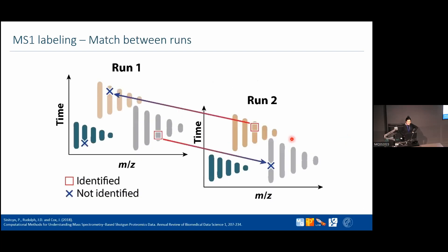Another feature available with MS1 level labeling is match between runs, a concept discussed before. Some people are confused thinking match between runs only applies to label-free data, but you can use it with MS1 level labeling and MS2 level labeling as well. One important constraint: you can only transfer features where both the heavy and the light are present — only fully quantified pairs can be matched across runs.